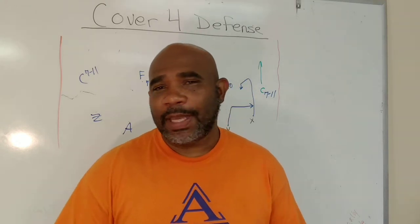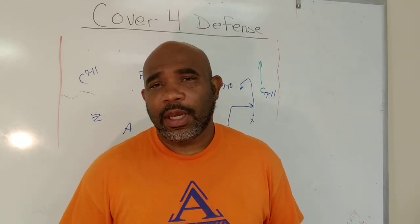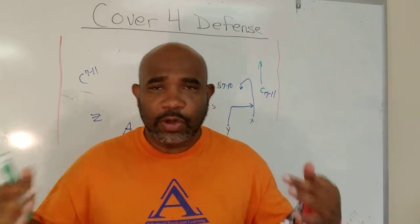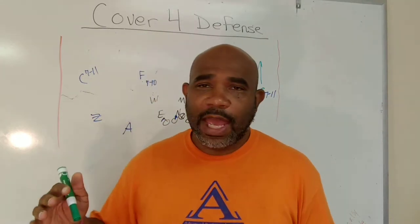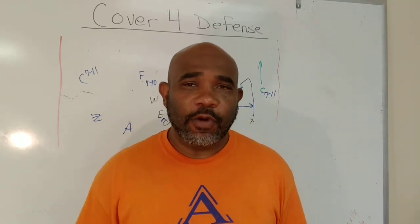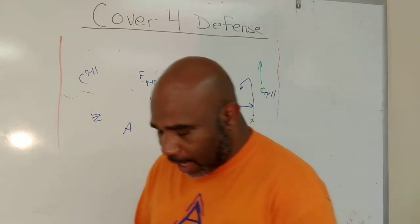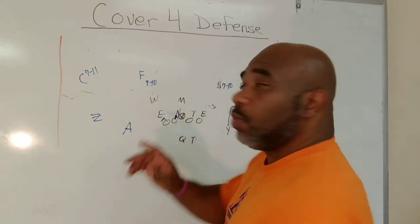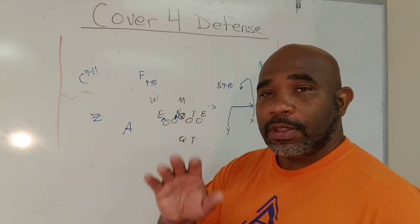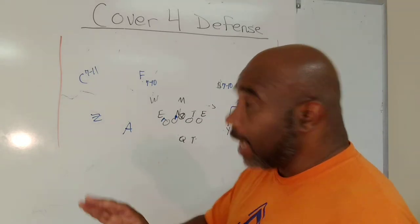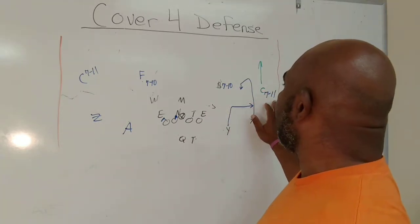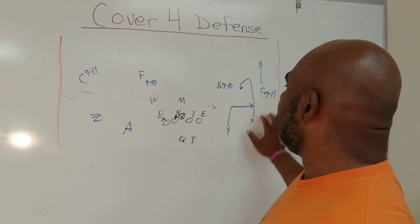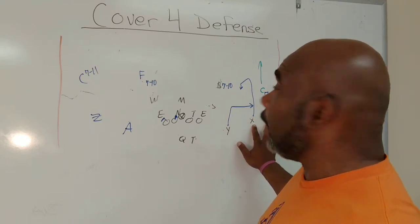We've already talked about the basic prevent defense and being good in certain situations, and we gave you guys a few variations of cover four defense. There were a couple things that I left off. We were talking about some base alignment. In general, your corner is 7 to 11 yards off the number one receiver, outside leverage.